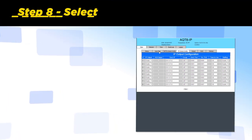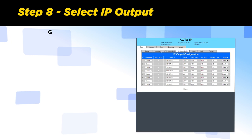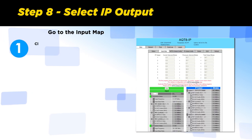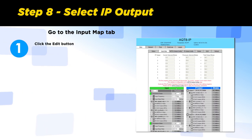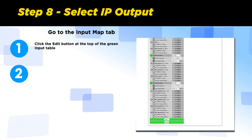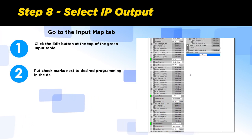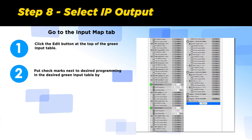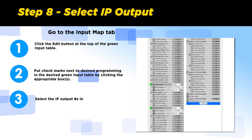Step 8: Select IP output. Go to the input map. Click the edit button on the top of the green input table. Put check marks next to the desired program in the green input table by clicking the appropriate boxes. Select the IP outputs in the blue table then click add.